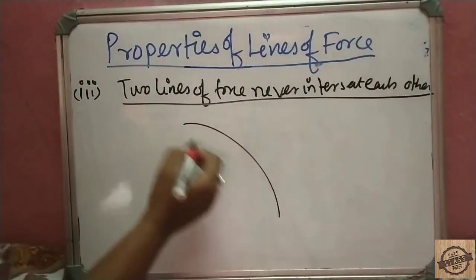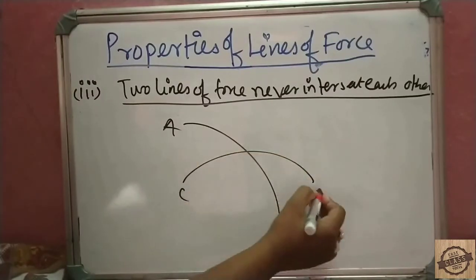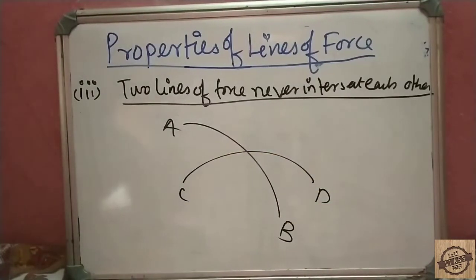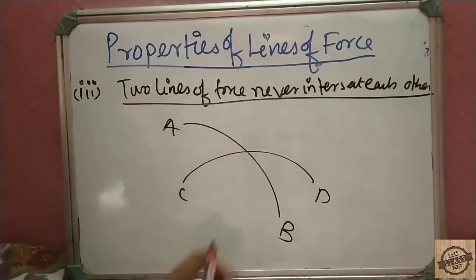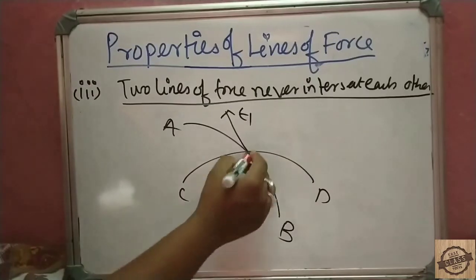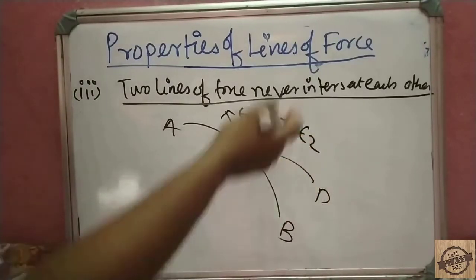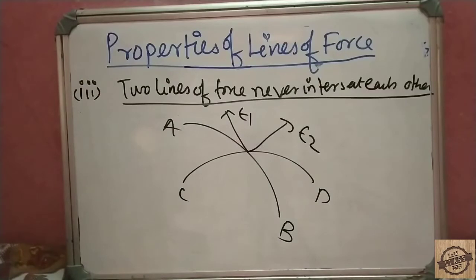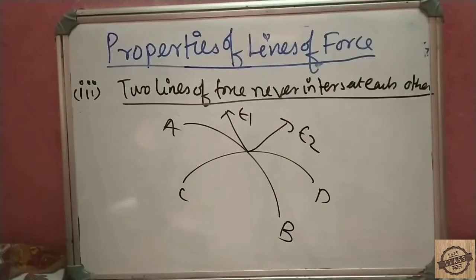To explain with a diagram: suppose lines of force AB and CD intersect at a point. At that intersection point, you could draw a tangent to AB and also a tangent to CD, giving two different directions of electric field at the same point. This is impossible, as the electric field can only have one direction at any point. So if you need to write the answer, you can support it with a diagram.